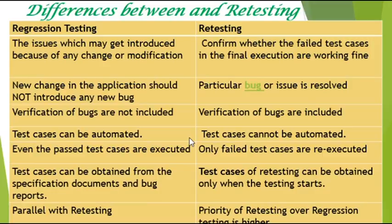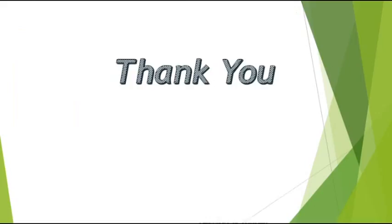The priority of retesting over regression testing is higher, so retesting is carried out before regression testing. Regression testing, based on the availability of resources, can be carried out in parallel with retesting. These are the major differences between regression and retesting. That's all for today — thank you so much for listening. If you want to learn more concepts about software testing, please subscribe to our channel.